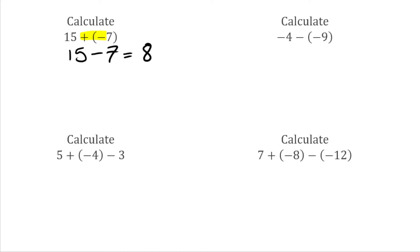For our next question, we have negative 4 take away negative 9. I've got a double sign again - a negative and a negative. Because the signs are the same, we can replace that with a single positive. So I would have negative 4 add 9 this time, which gives us positive 5.